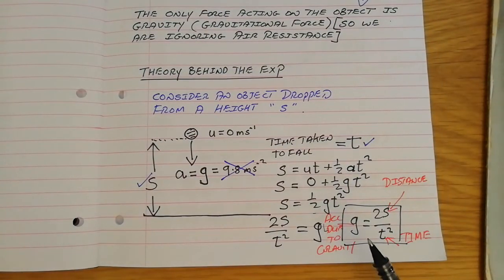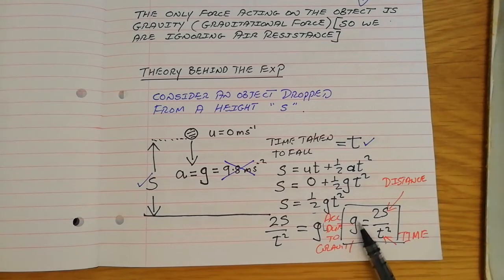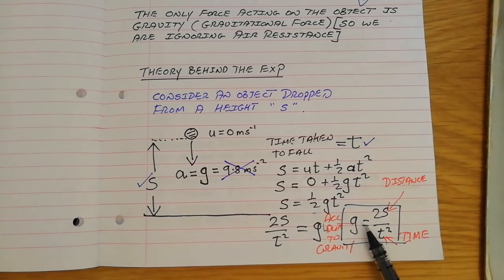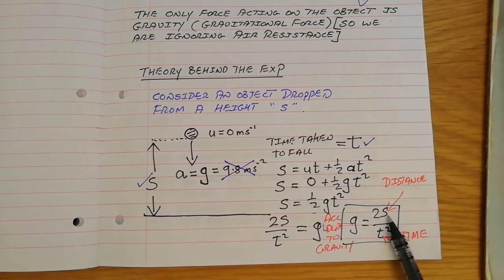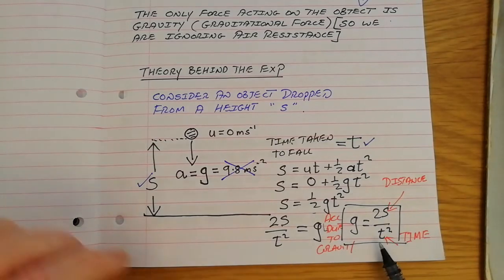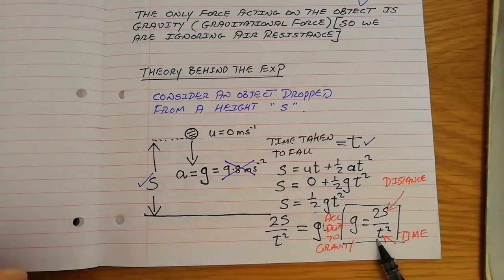For an object falling freely under gravity and no other force, we said the acceleration it's under, the acceleration due to gravity, is 2s over t squared, where s is the distance the object falls and t is the time taken to fall that distance.